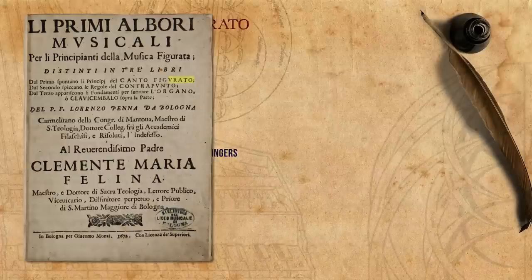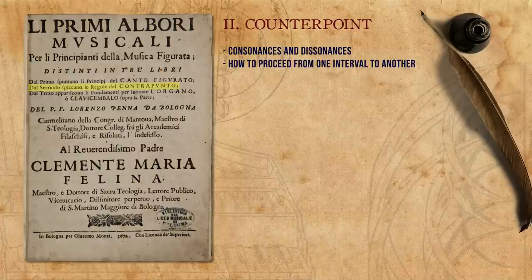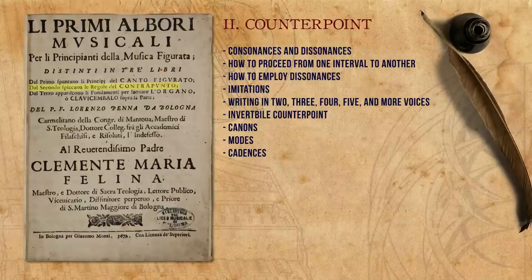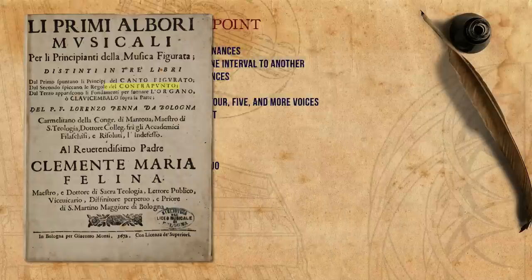The second book is about counterpoint: the consonances and dissonances, how to proceed from one interval to another, how to employ dissonances, imitations, guidelines to writing in 2, 3, 4, 5, and more voices, invertible counterpoint, canons, modes, cadences, and the very basics of basso continuo.